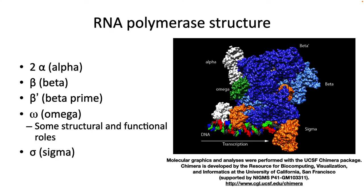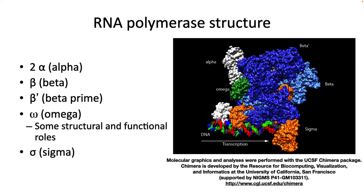RNA polymerase from E. coli has five subunits: alpha, beta, beta prime, omega, and sigma. E. coli contains about 2,000 copies of RNA polymerase per cell. RNA polymerase from archaea and eukarya is different, containing at least 13 subunits. Eukarya also have three different RNA polymerases. Right now, we're going to focus on transcription in bacteria.